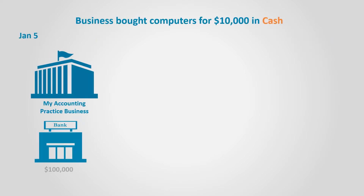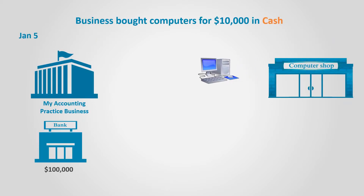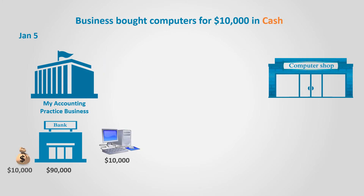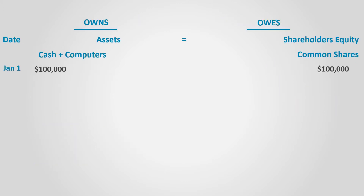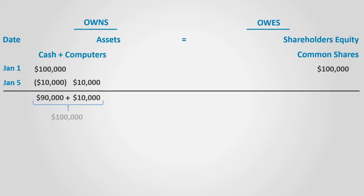On January 1st, the company bought computers for $10,000 in cash. The business now owns $90,000 in cash and computers for $10,000. Computers are also considered assets since the company owns them as well. The cash decreases by $10,000 and at the same time the computers increase by the same amount, resulting in zero change on the asset side.